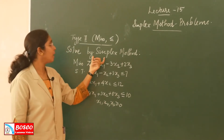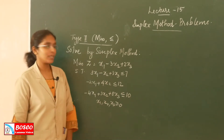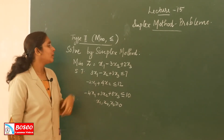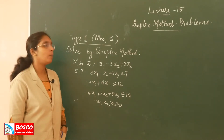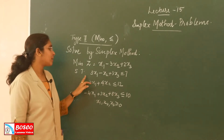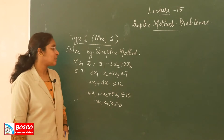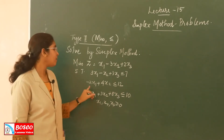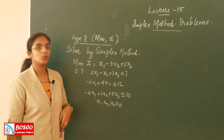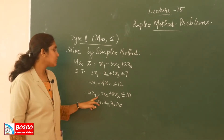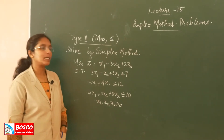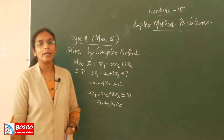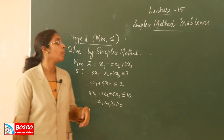One of the problems of the Simplex method: solve by Simplex method — minimize Z is equal to X1 minus 3X2 plus 2X3, subject to the constraints: 3X1 minus X2 plus 3X3 less than or equal to 7; minus 2X1 plus 4X2 less than or equal to 12; minus 4X1 plus 3X2 plus 8X3 less than or equal to 10; and X1, X2 and X3 greater than or equal to 0.